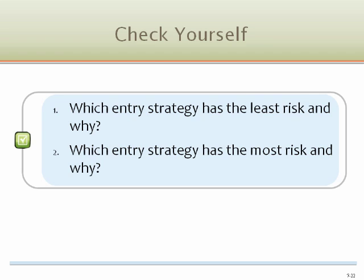Check yourself. Which entry strategy has the least risk and why? Exporting requires the least financial risk, but also allows for only a limited return to the exporting firm. Global expansion often begins when a firm receives an order from another country, facing little risk because it has no investment in people, capital, equipment, buildings, or infrastructure. Which entry strategy has the most risk and why? Direct investment requires a firm to maintain 100% ownership of its plants, operation facilities, and offices in a foreign country, often through wholly owned subsidiaries. This requires the highest level of investment and exposes the firm to significant risks, including the loss of its operating and/or initial investments.